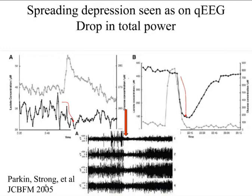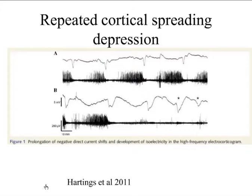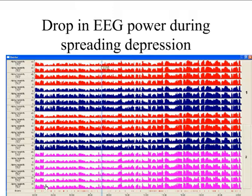Spreading depression is a sudden depolarization of the brain which is not a seizure, but another arrhythmia of the brain. This shows spreading depression on a power array. Tony Strong and others have worked on this over years — this is the next thing that's coming. We're going to have to detect and probably treat this, because it's probably as frequent or more frequent than seizures. So far we're documenting it — we don't know what the treatment is. Here are drops in power which are probably spreading depression in this particular patient.